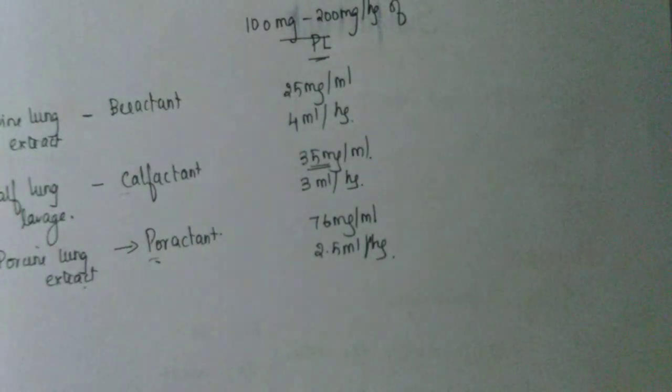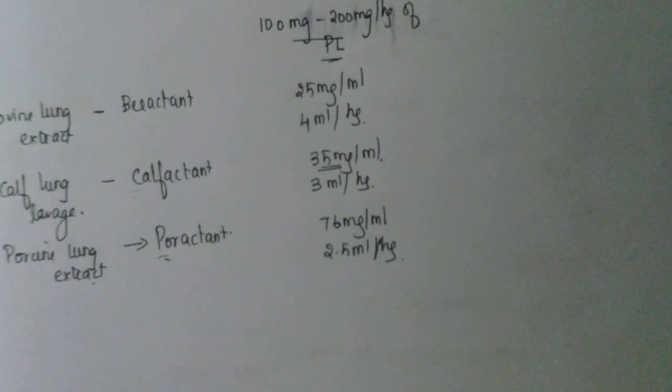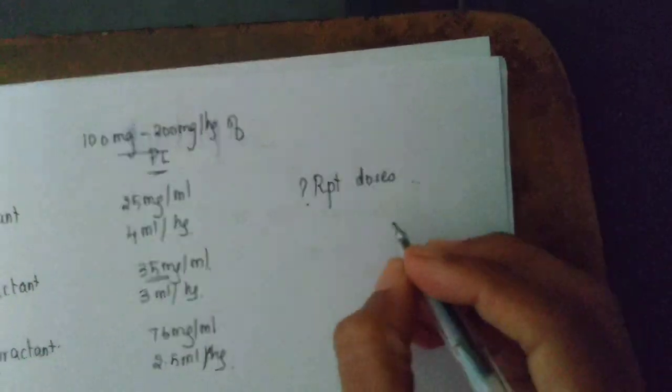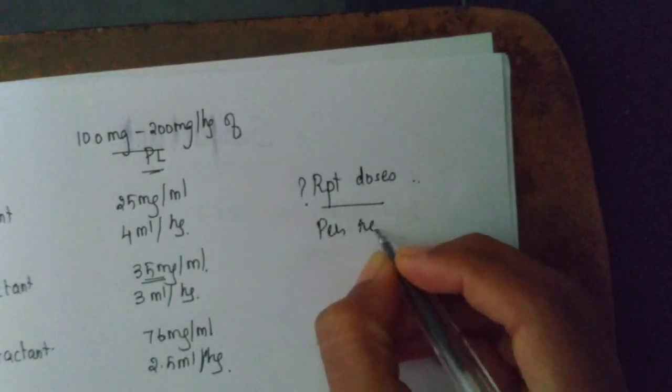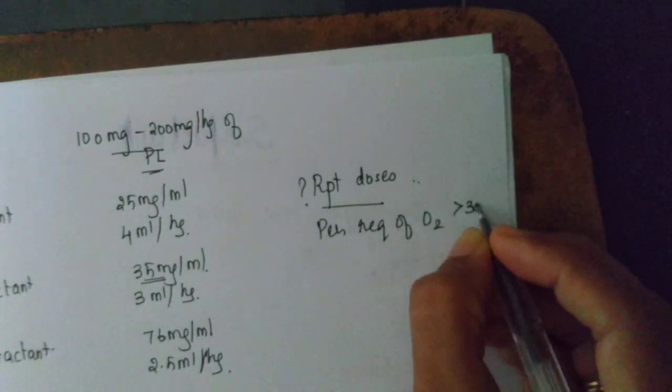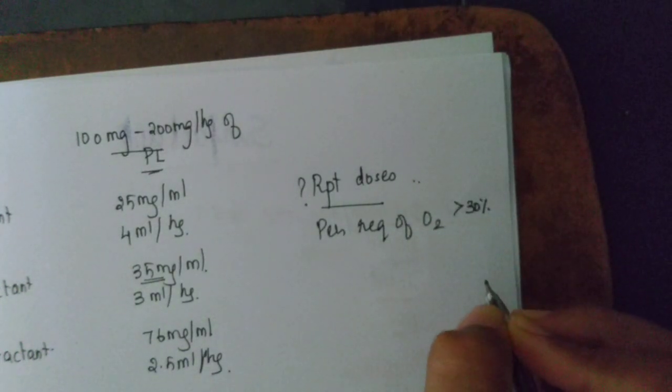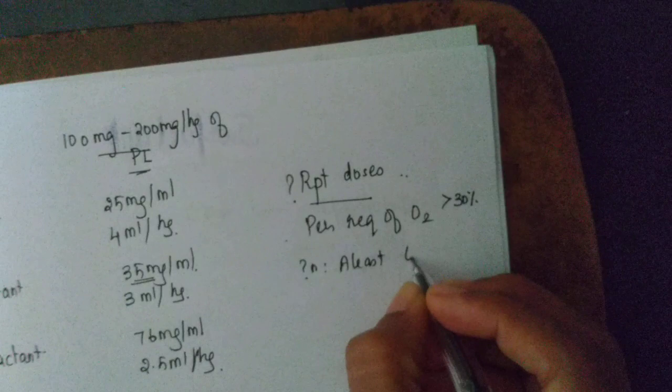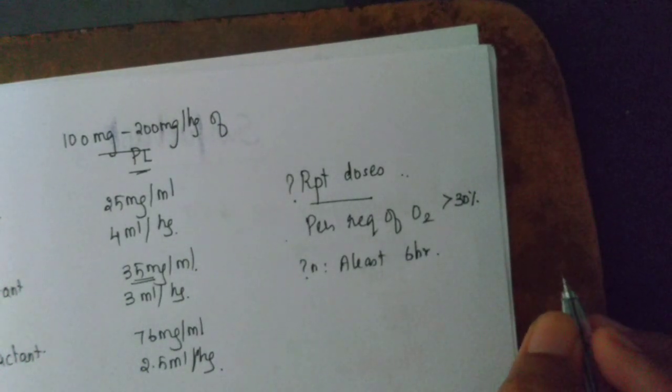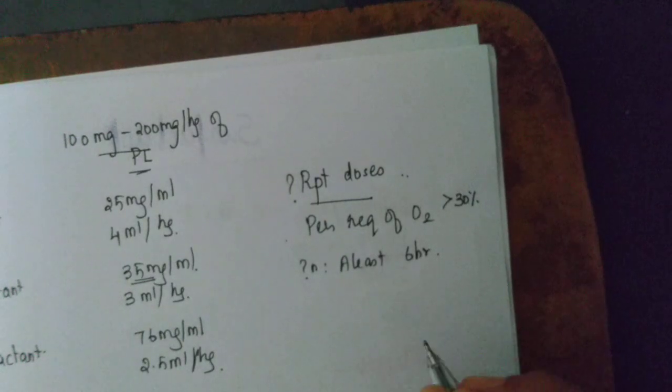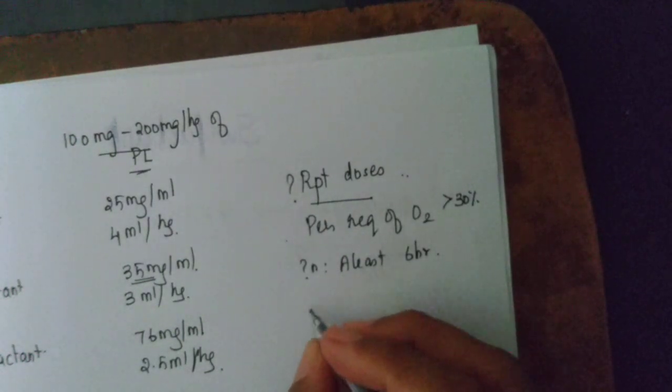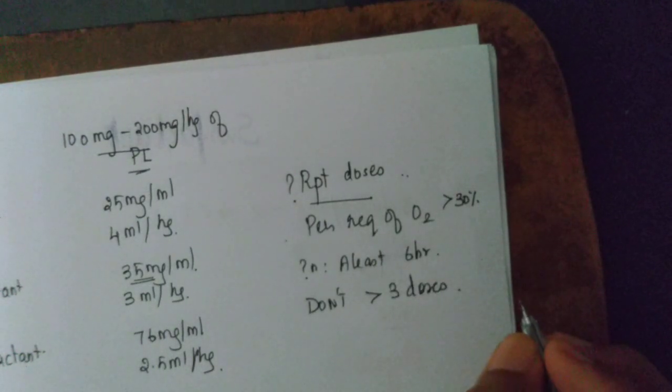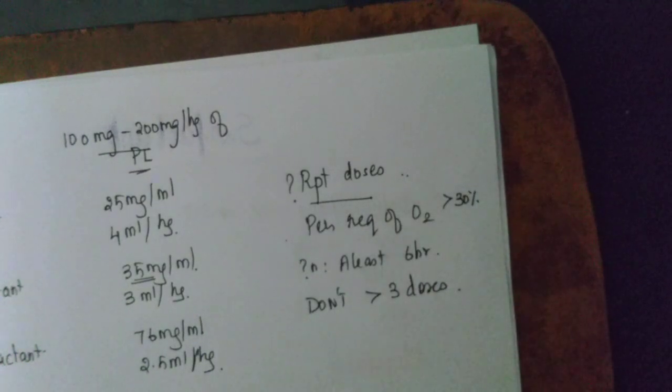What about repeat doses? Should we give repeat doses? It can be considered whenever there is persistent requirement of oxygen more than 30 percent FiO2 requirement. Then you can give. When to give the repeat dose? At least six hours, you can give it as early as even two hours but ideally wait for at least six hours. This is a grade A recommendation and don't give more than three doses, it is not going to have any effect.